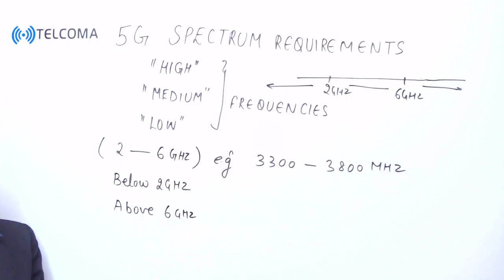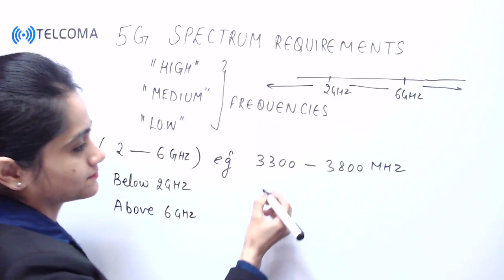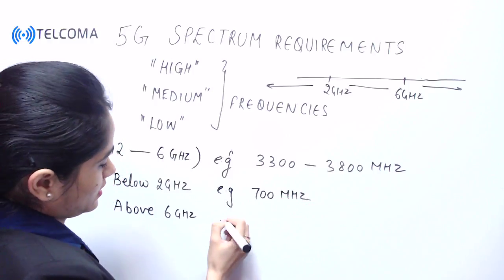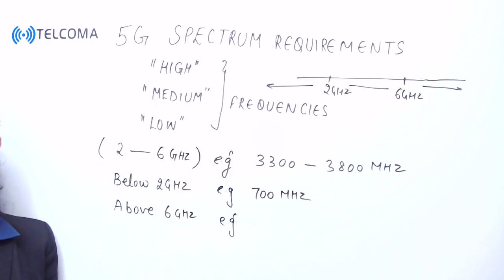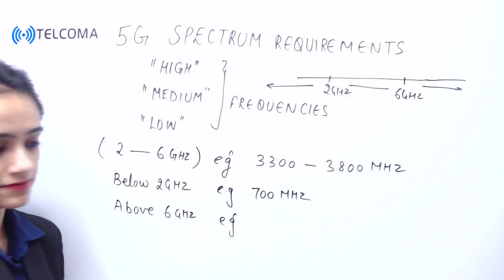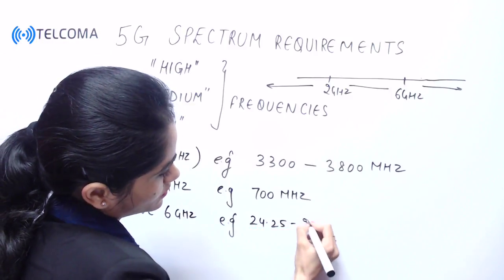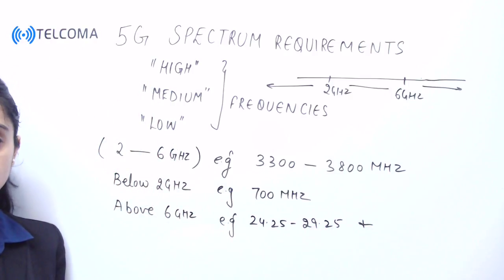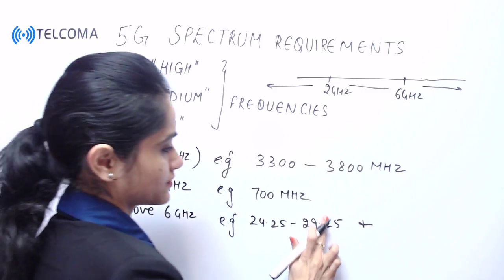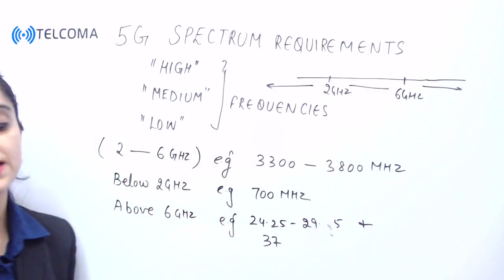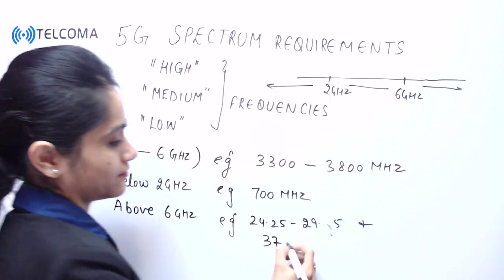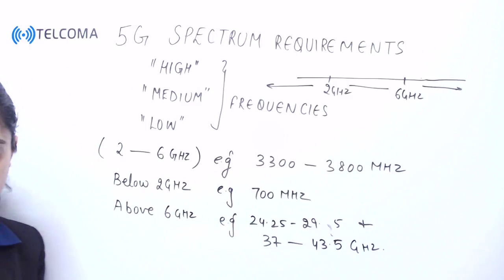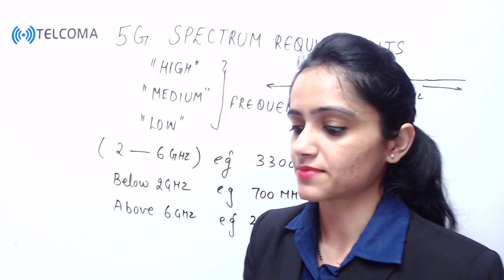If we talk about below 2 gigahertz, we have 700 megahertz as an example. If we talk about above 6 gigahertz, we have bands at 24.25, 29.5, 37, and 43.5 gigahertz. A sufficient amount of harmonized spectrum in each layer should be provided to enable and deliver 5G services.